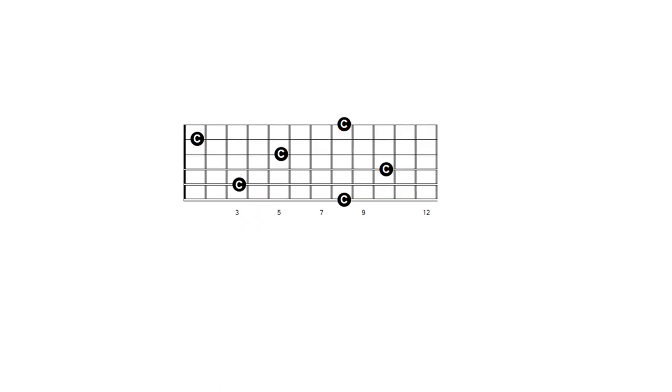Each of the five CAGED shapes has more than one root location. Here is a helpful shortcut to recall the string location of the closest root. When ascending in frets, the order of strings is B, A, G, E, D.